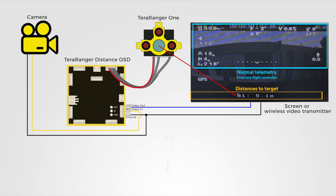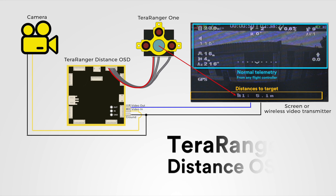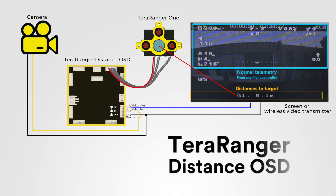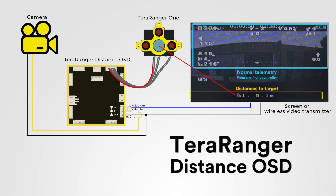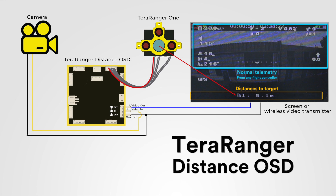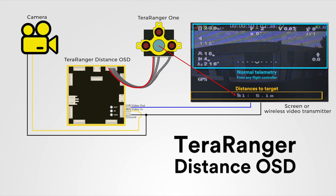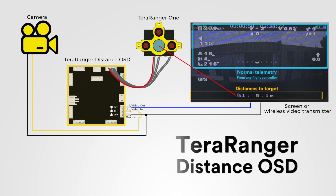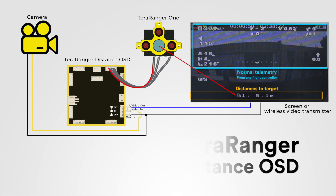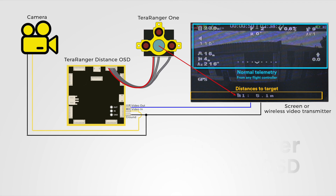This is an introduction to Terraranger Distance OSD including a short in-flight demo. Terraranger Distance OSD is a lightweight electronic board that allows you to view distance values from up to eight Terraranger 1 distance sensors directly on your live video feed.